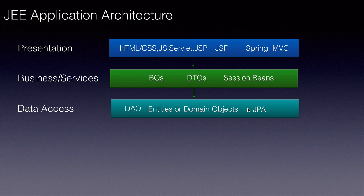Implementations of the JPA standard include Hibernate, EclipseLink, TopLink, and others. As developers, we just master the JPA API and we'll be able to use any of those underlying ORM tools.